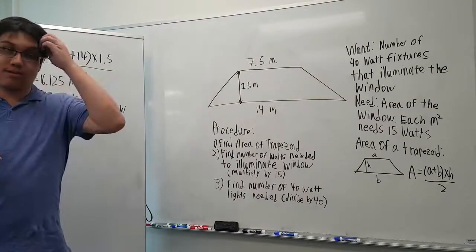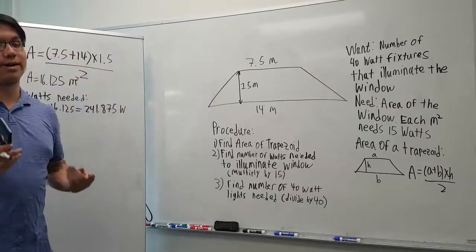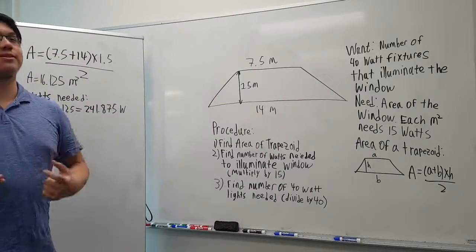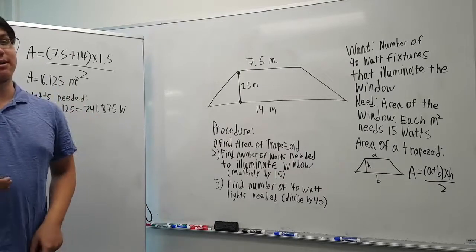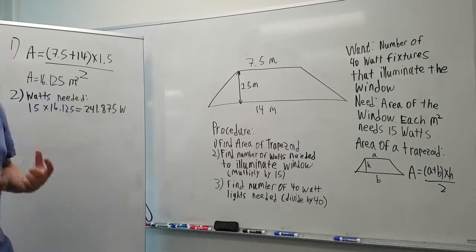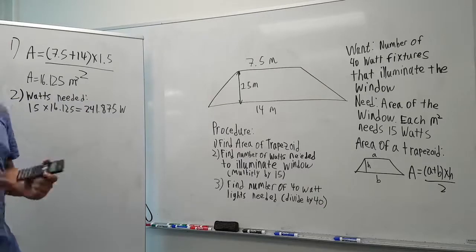Step 3: We don't have one-watt light bulbs; we have 40-watt light bulbs. Each light bulb carries 40 watts of power, so we divide the total watts needed by 40 to find the number of light bulbs we need.